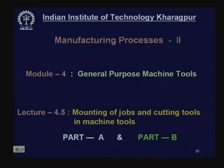Welcome again to our course Manufacturing Processes 2. We are running module four, general purpose machine tools, and now is the fifth lecture under module four: mounting of jobs — that is work pieces or blanks — and cutting tools in machine tools. This is very important because the perfection or quality of manufacturing by machining is affected by the appropriateness of mounting of the tool and job. There are two parts, part A and part B. We have already completed part A, and today we cover part B.